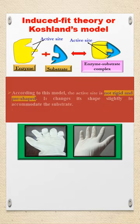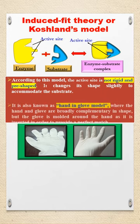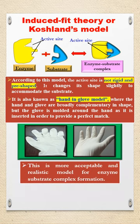According to this model, the active site is not rigid and pre-shaped. It changes its shape slightly to accommodate the substrate. This is also known as the hand-in-glove model. This is more acceptable compared to the lock-and-key model.